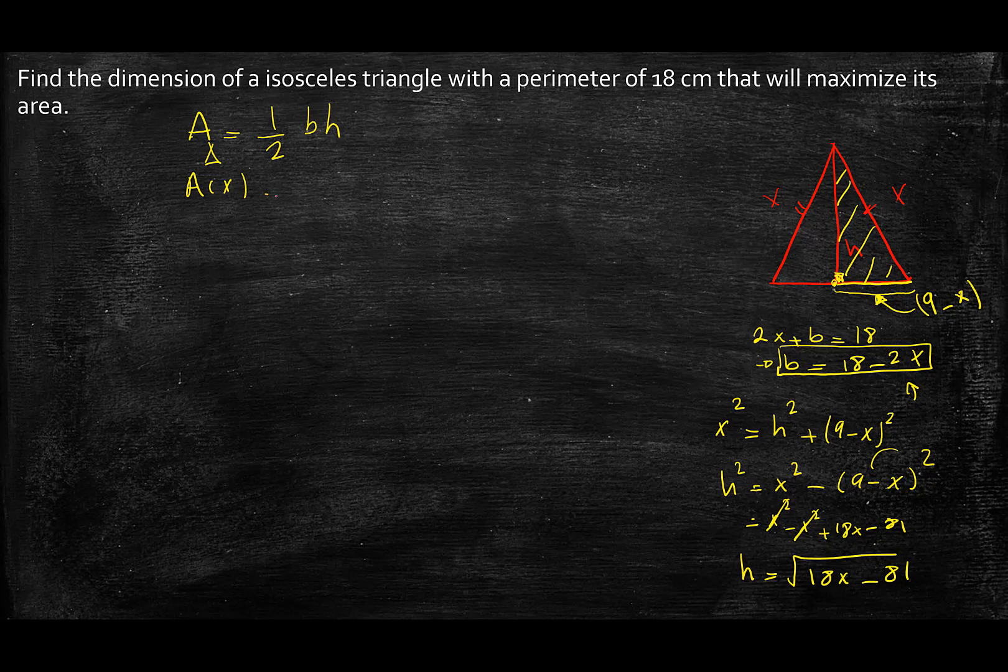Okay, great. Now that we have that, we can just plug that back into our area equation. And now since half of b is just 9 minus x, I can just write 9 minus x because we need that in terms of x. And then h is just 18x minus 81 to the power of a half.